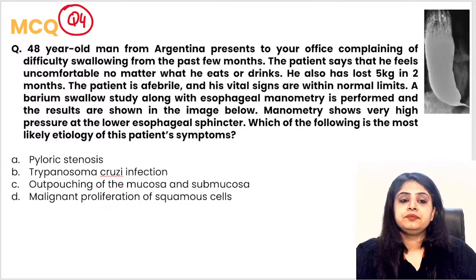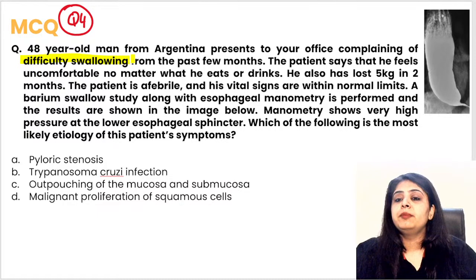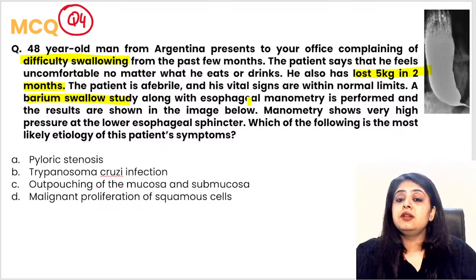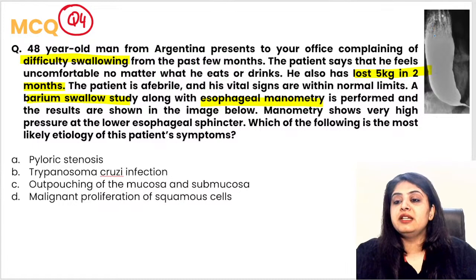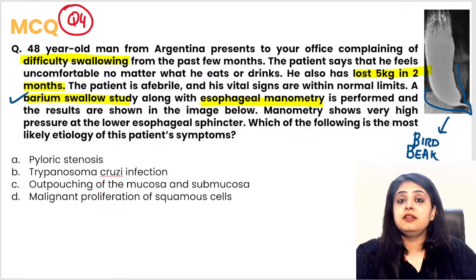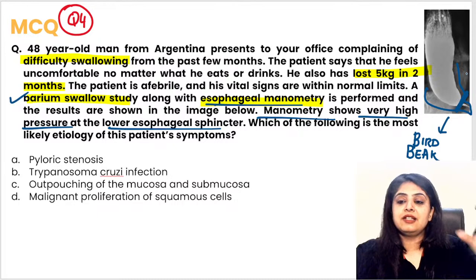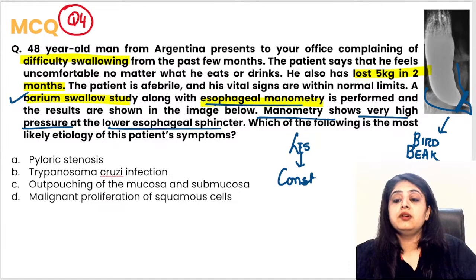Question four: a 48-year-old man with difficulty swallowing regardless of what he eats or drinks, and 5 kg weight loss in two months. Barium study and esophageal manometry were performed. The barium study shows a characteristic bird beak appearance, making the diagnosis straightforward. Esophageal manometry showed very high pressure at the lower esophageal sphincter, which is constricted — this is achalasia cardia.